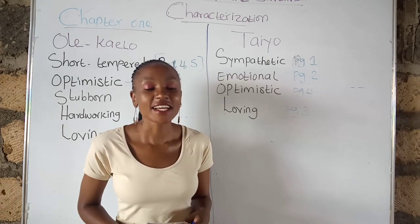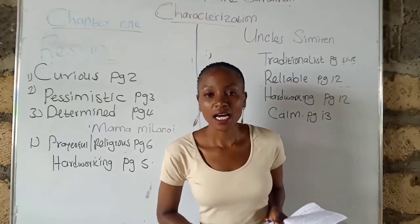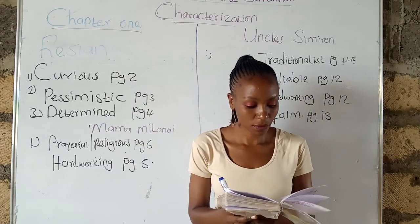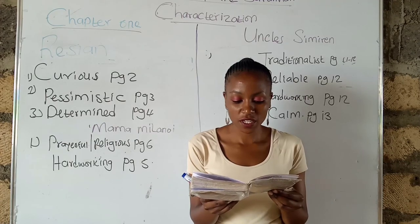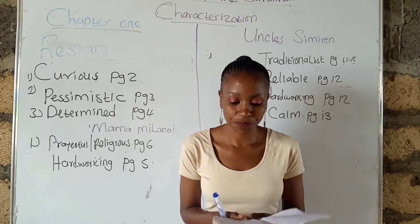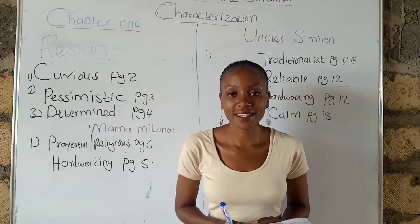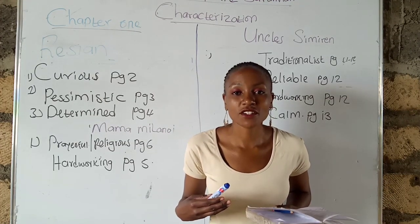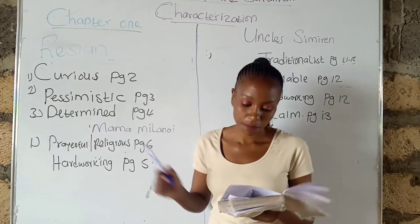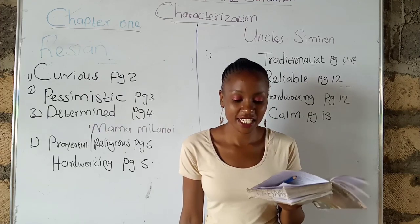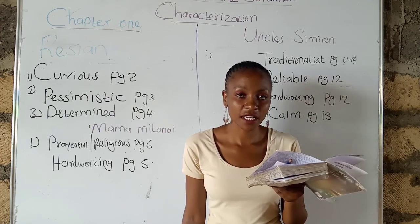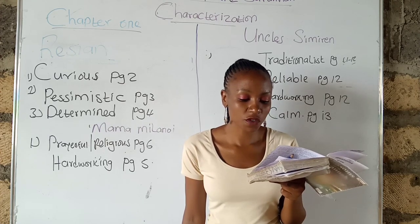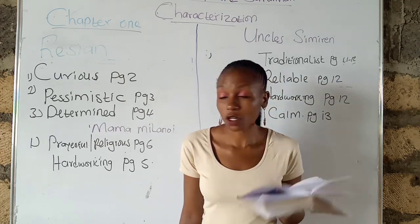Now, Resian. Number one, she is curious — curious about what life is going to be like in Nasila. Page two, last paragraph: 'Tayo, what do you think life is going to be like in Nasila?' Two, she is pessimistic — a person who thinks bad things are going to happen in the future. She asks what will happen if father's shop does not do well. Page three, last paragraph: 'Somehow worried, Resian's voice dropped a little with apprehension — what do you think will happen to us if the shop father intends to open does not become as successful as he hopes?'